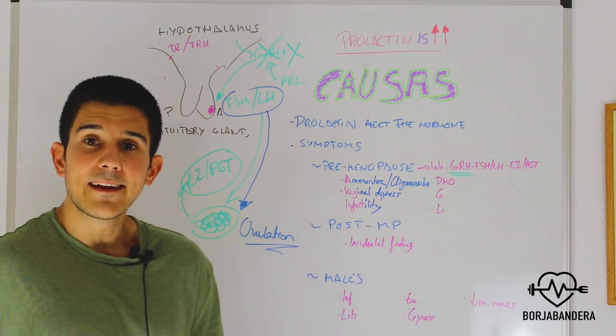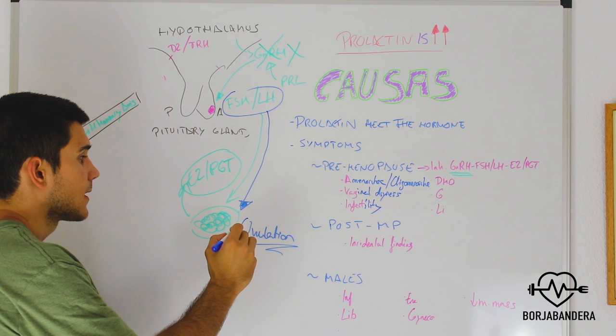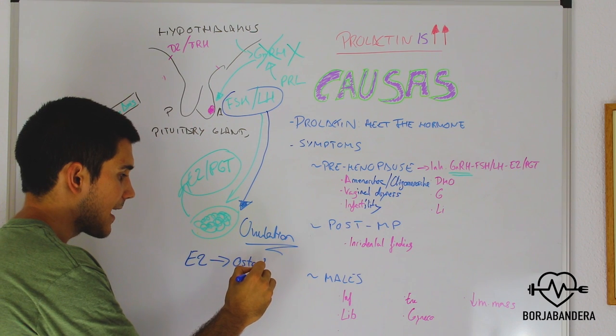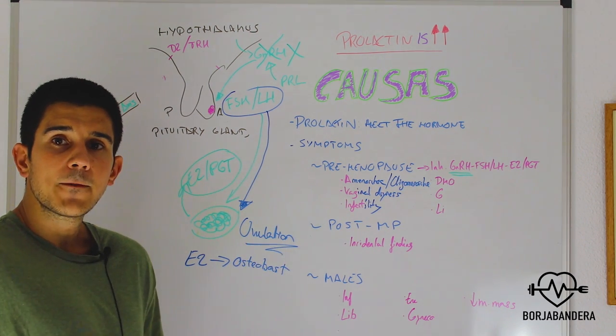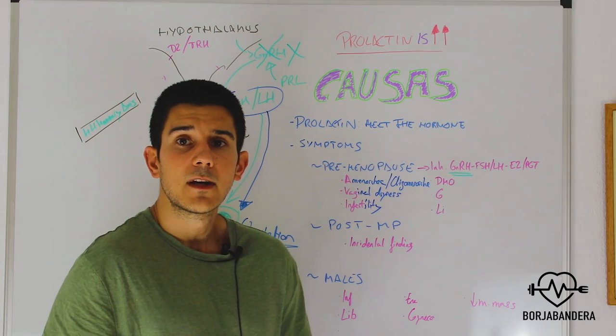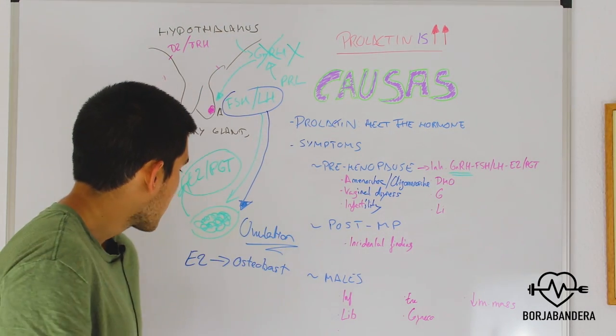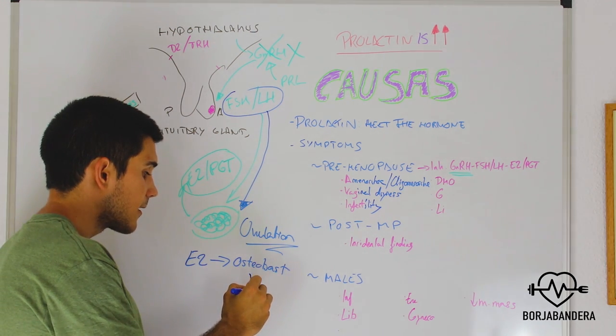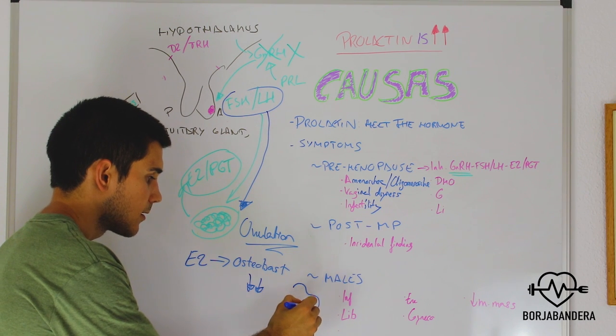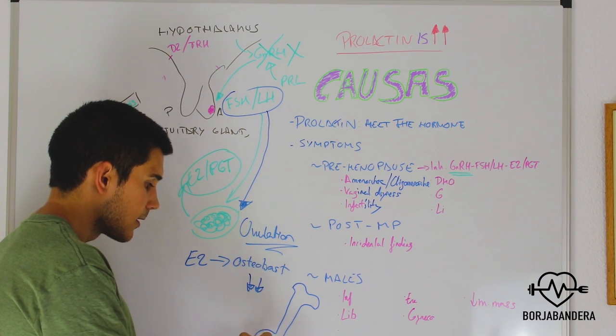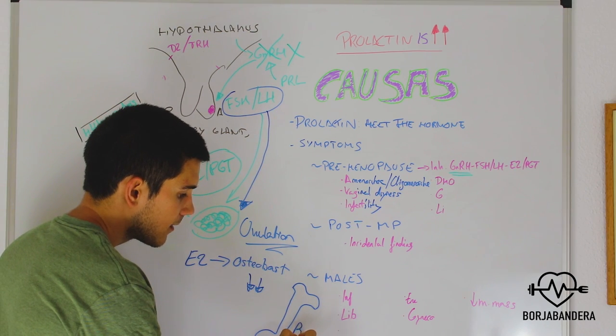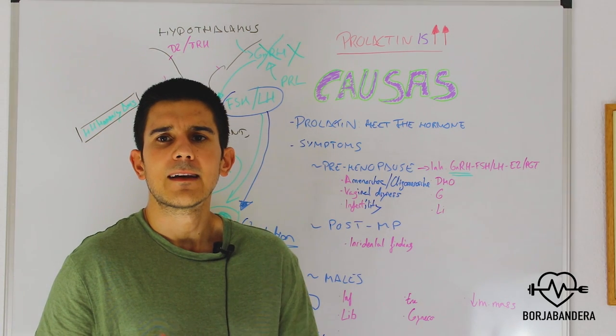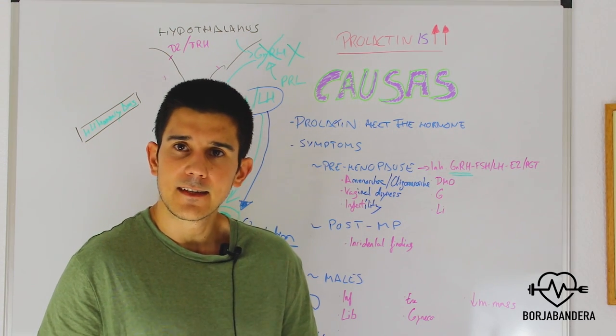We need the gonadotropins onto the ovaries to produce the ovulation. So we are infertile. Bone loss. Why? Estrogens activate osteoblasts. This is the main cell of the bones that creates the bone and produce bones. So when we don't have enough estrogen, osteoblasts are silent and we lose bone. Our bones are brittle and low quality. We don't have strong resistant bones.